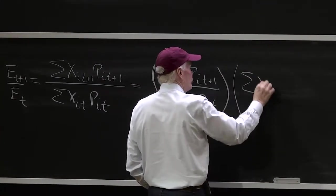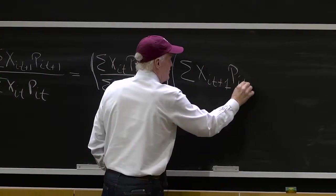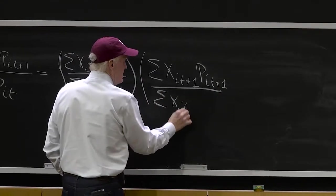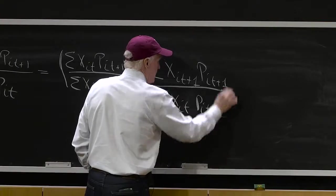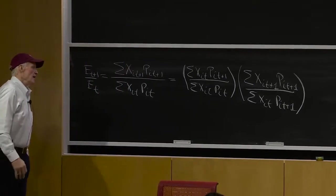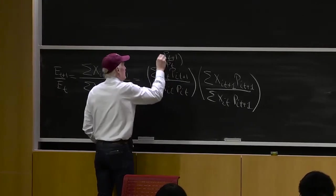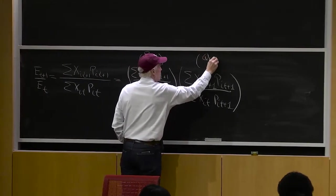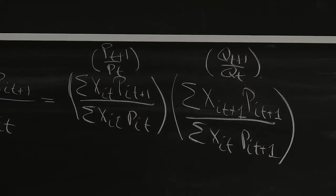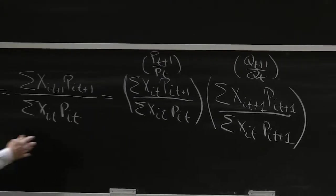And we could then use also a quantity index. And the corresponding quantity index, xi t plus 1, pi t plus 1, divided by the sum of xi t, pi t plus 1. So you can see this works, because I just inserted the same term here and here, so it cancels. And so you would call this like p t plus 1 over p t, and this could be thought of as q t plus 1 over q t.